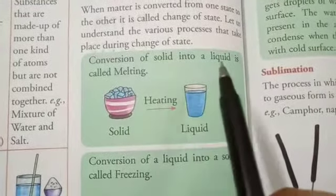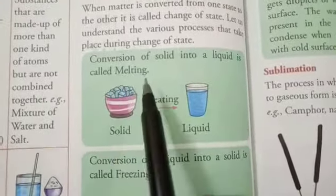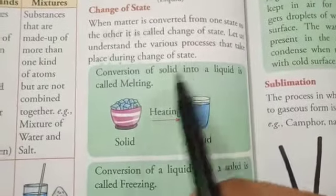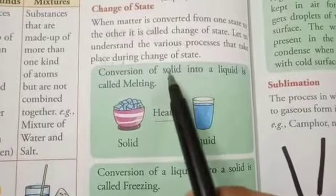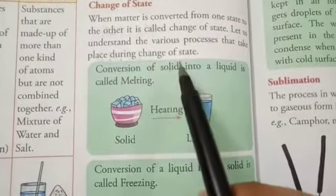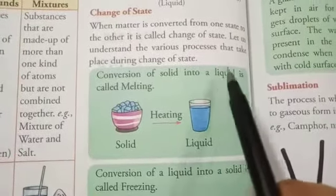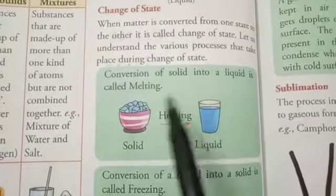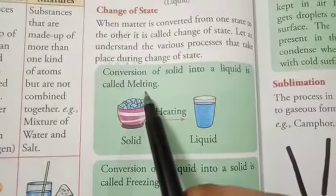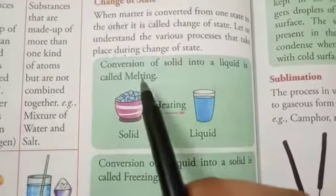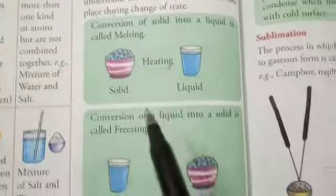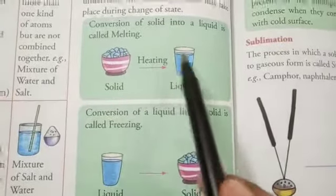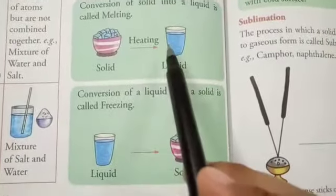Let us understand the various processes during change of state. Conversion of solid into liquid is called melting. When ice is solid and we change it into water, it will melt. When the solid changes into liquid, we say melting. When we heat the ice, it will change into water — we say melting.